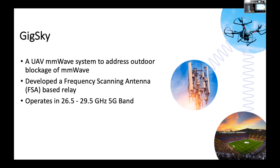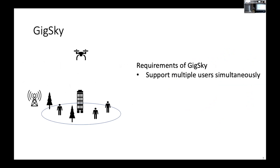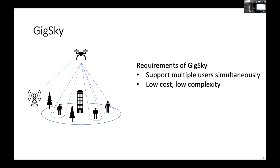Before we dive into the design details, let's look at our design goals. Using an example scenario, if we want to cover users distributed in an area and enable connectivity to a remote base station, we can fly our GIGSky system over that area. The first goal is to support multiple users simultaneously with high data rate connectivity, where the UAV relays the signal and generates multiple beams simultaneously to cover different areas on the ground. The second goal is to achieve this with a low complexity and low cost system.